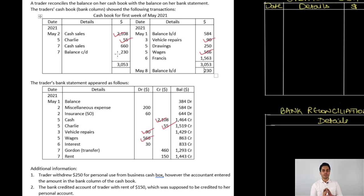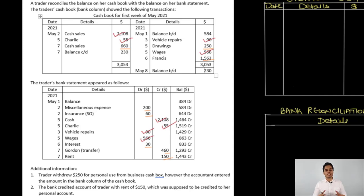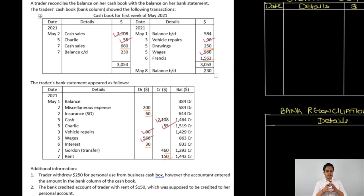Once you're done with that, you will realize that there are certain amounts that are either there only in the cash book and not in the bank statement, or they're there in the bank statement but not in the cash book. These are the reasons for the difference in the cash book balance and the bank statement balance. The cash book balance on 7th May is $230 overdraft balance, but the bank statement balance is a positive balance of $1,443. The transactions not present in both books are the reasons for this difference.